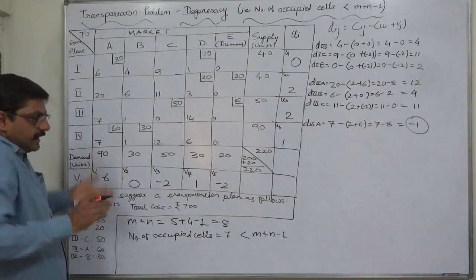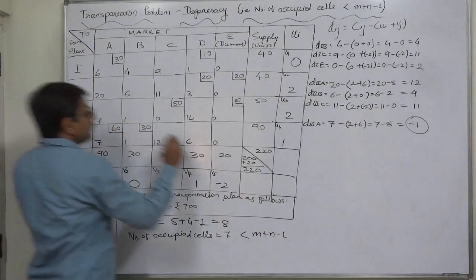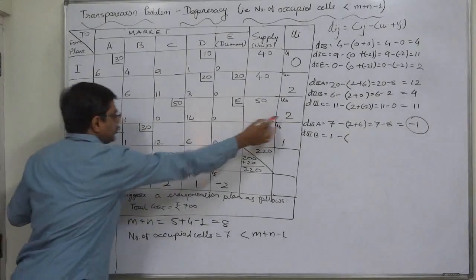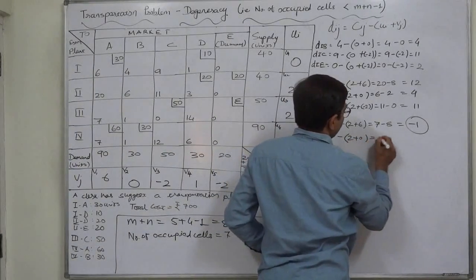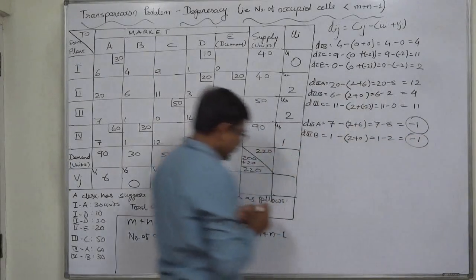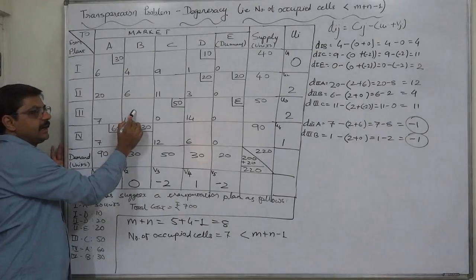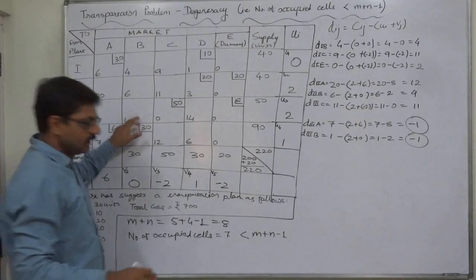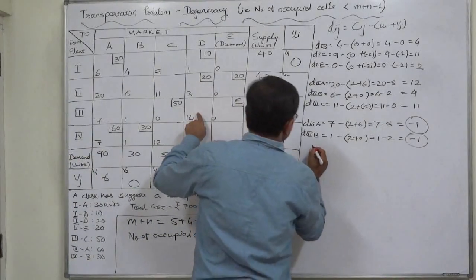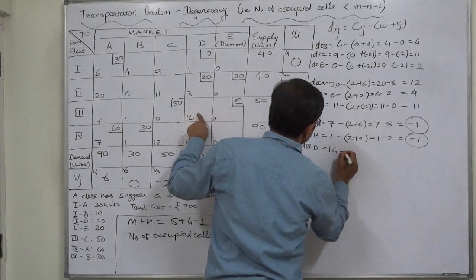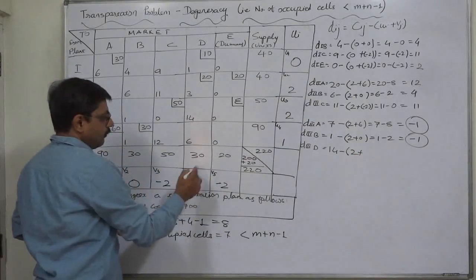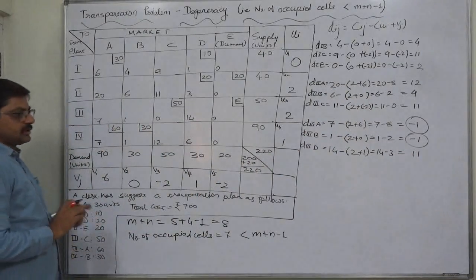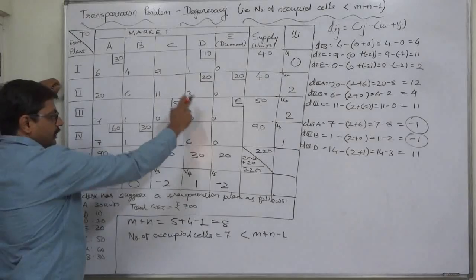Let us calculate for others — there may be more negative values. For d(3b): c is 1 minus ui 2 minus vj 0 = 1 minus 2 = minus 1. In this cell also, if we make any allocation, the total transportation cost will decrease by rupee 1 per unit. For d(3d): 14 minus 2 plus 1 = 14 minus 3 = positive 11 — cost increases by rupees 11, so no allocation there.